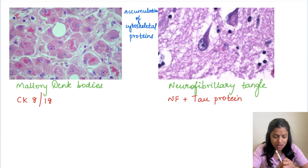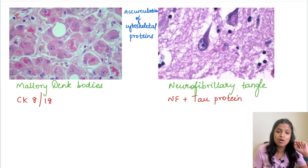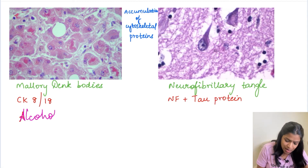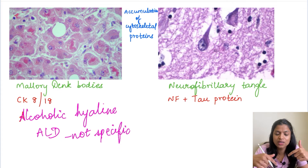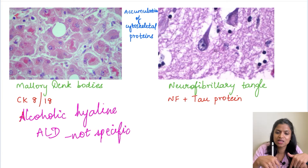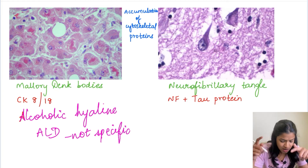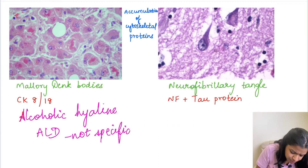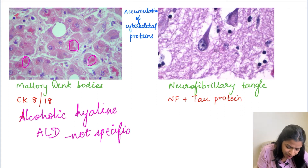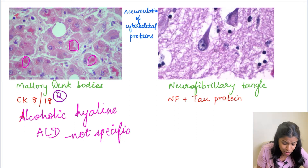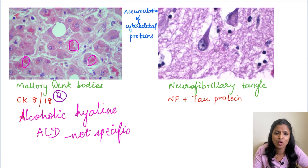Starting with examples of cytoskeletal protein accumulation: the first is the Mallory-Denk body, also called Mallory hyaline or alcoholic hyaline. It is seen mainly in alcoholic liver disease, though not exclusively — it is also seen in other liver conditions including hepatocellular carcinoma. It appears as a pinkish material and is composed of the intermediate filament cytokeratin, specifically cytokeratin 8 and 18 — a very important MCQ. These Mallory-Denk bodies are not specific for alcoholic liver disease.